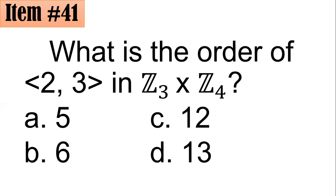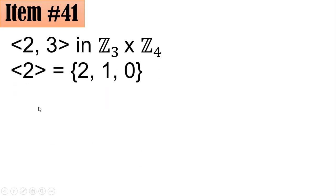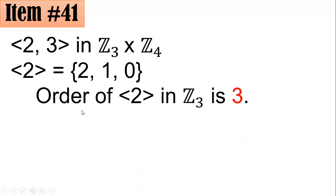This is abstract algebra. The element 2 is in Z3, and the element 3 is in Z4. For the element 2 in Z3: starting with 2, adding 2 gives 4, and 4 divided by 3 has remainder 1. Then 1 plus 2 gives 3, and 3 divided by 3 gives remainder 0. Since we reach the identity element 0, we stop. The order of 2 in Z3 is 3, because it produced 3 elements in all.